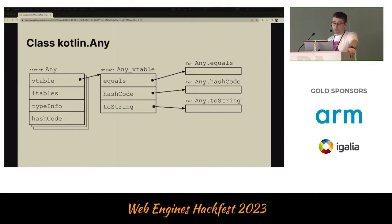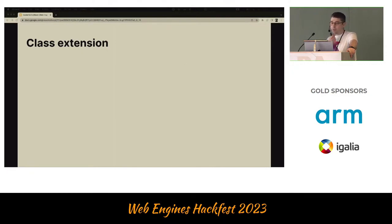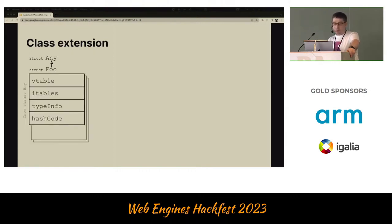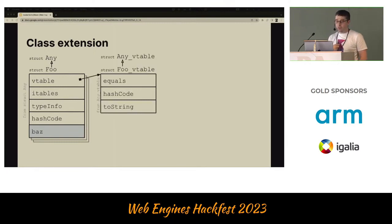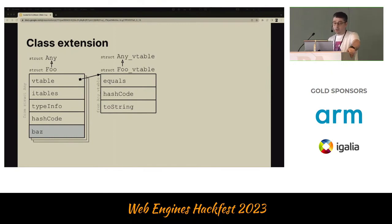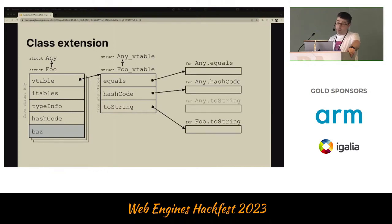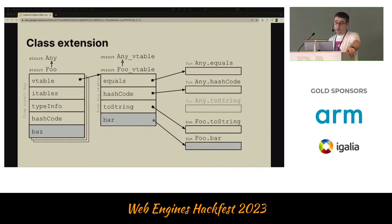Let's introduce another class Foo, extending Any with one more field. In Wasm, we extend the Any structure, repeat the fields from Any, and introduce a new one. We also want to override some methods and add a new one. To achieve that, we introduce a new vtable and change the type of the original vtable field to a more specific one, to avoid costs when accessing the vtable to call something. In the new vtable, we change the reference to toString because we want to provide our own implementation, and introduce a new field bar for the new method.